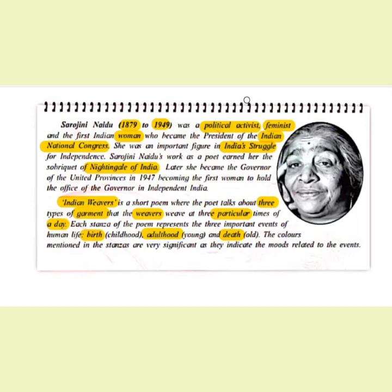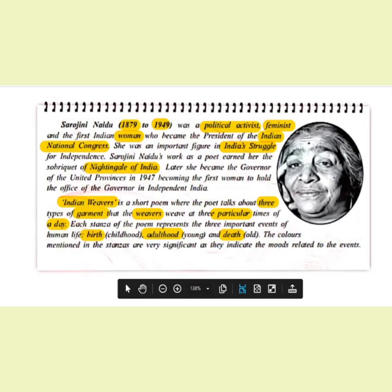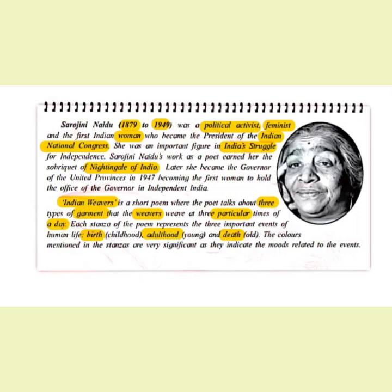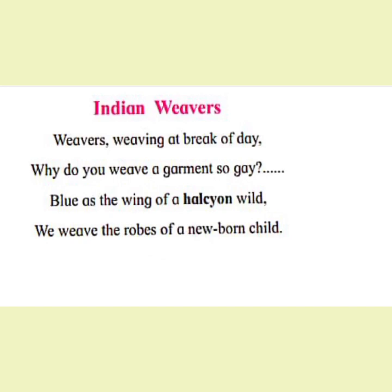To understand and appreciate this poem, we analyze each stanza by identifying: first, the time of day; second, the color used to indicate mood; third, the type of garment being woven; and fourth, how these stages of life are reflected through the colors. We'll study each stanza separately and then connect them.